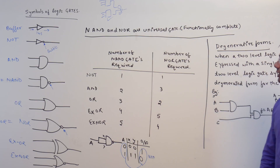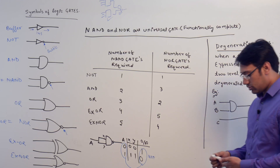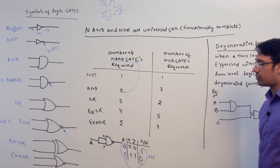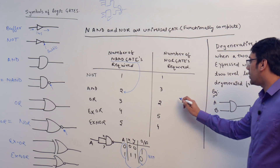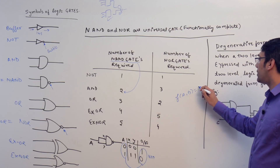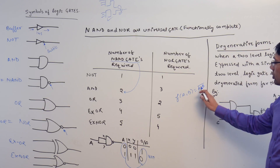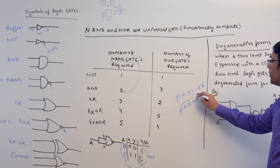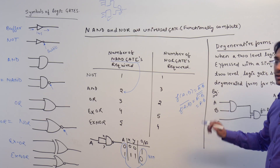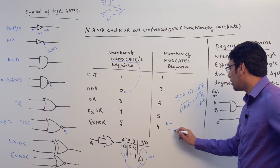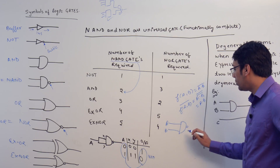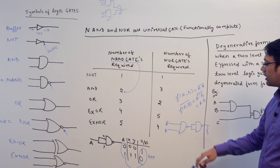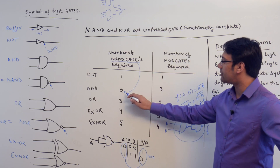Let me take one more example. The question is how many NAND gates are required to create an AND gate. The equation of a NAND gate is f(a,b) = (a·b)'. If you take the complement of this function, you get (a·b)'' = a·b itself. So if you represent a NAND gate followed by a NOT gate — which is also created using a NAND gate — this circuit represents an AND gate. You need two NAND gates to represent an AND gate.